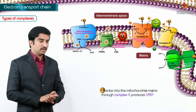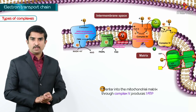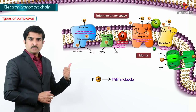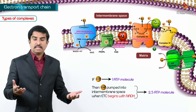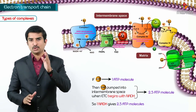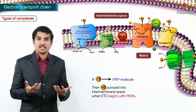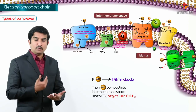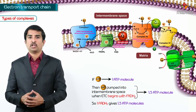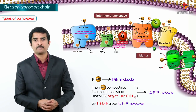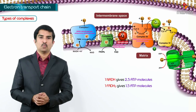Every 4 hydrogen ions that flow back into the mitochondrial matrix via complex 5 produce 1 ATP. Therefore, 10 hydrogen ions from NADH produce 2.5 ATP, meaning 1 NADH equals 2.5 ATP. For FADH2, 6 hydrogen ions are produced: 4 give 1 ATP and 2 give 0.5 ATP, so 1 FADH2 equals 1.5 ATP.